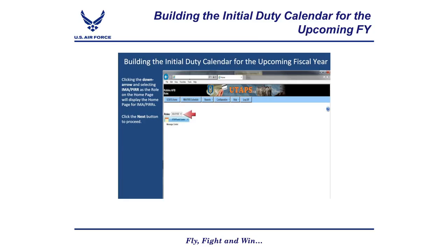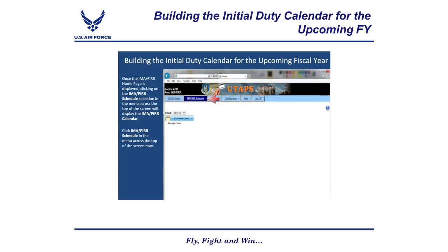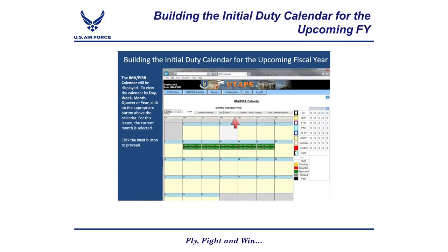Clicking the down arrow and selecting 'IMA PIRR' as the role on the home page will display the home page for the IMA PIRRs. Once the IMA PIRR home page is displayed, clicking on the IMA PIRR schedule selection in the menu across the top of the screen will display the IMA PIRR calendar. To view the calendar by day, week, month, quarter, or year, click on the appropriate button above the calendar.